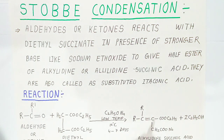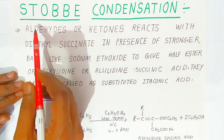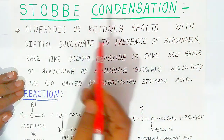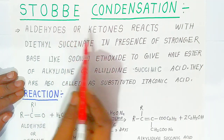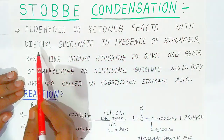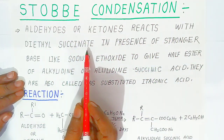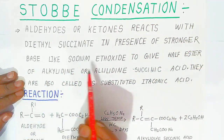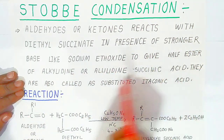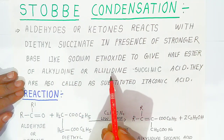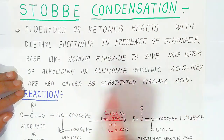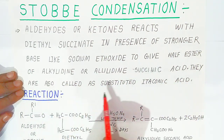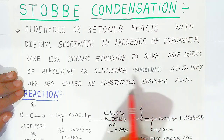Hello students, welcome to Bolanath Academy. Today we are going to see one more type of condensation reaction called the Stobbe condensation reaction. In this condensation reaction, aldehydes or ketones react with diethyl succinate, which is a type of ester, in presence of a stronger base like sodium ethoxide to give the half ester of alkylidene succinic acid, also called substituted itaconic acid.